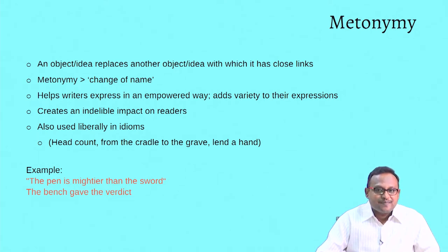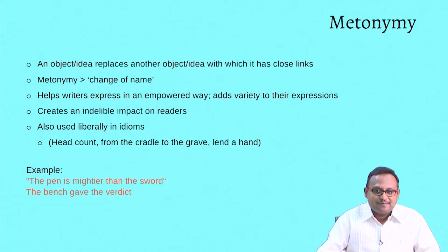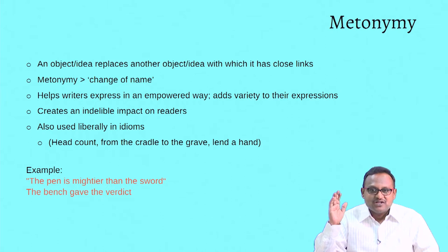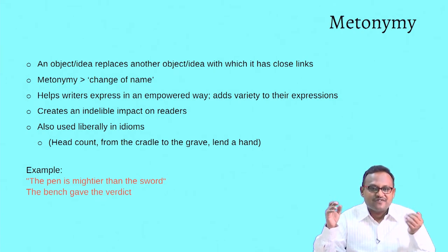Metonymy again has a Greek origin — the root means a kind of changing of name, a change of name. What happens here is when we use it, we replace an idea or a subject by another idea or subject or thing which has a close relationship with what we are discussing. For instance, rather than directly discussing A, we make use of something that shares some kind of relationship with A.